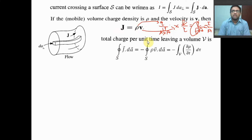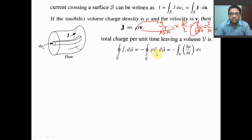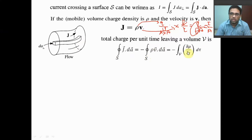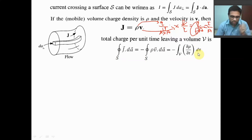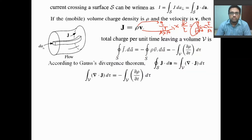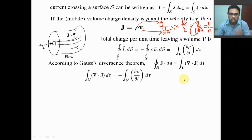Now, total charge per unit time leaving a volume — in that case we can write this. Here the charge density is actually changing with time, that is the rate of change of charge density. We are clubbing the length L with the area to get the volume element. According to Gauss's divergence theorem, the closed surface integral of J·dF equals the divergence of volume current density over the volume enclosed by the surface. Using that we can write this.